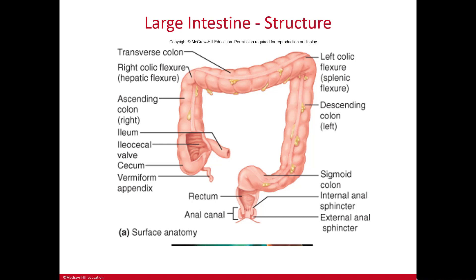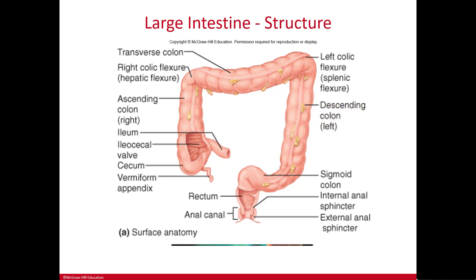Coming down the left side of the abdomen is the descending colon. The colon then makes a small S-shape called the sigmoid colon. At the bottom of the sigmoid colon, the large intestine ends in the rectum and then the anal canal.